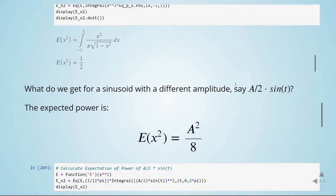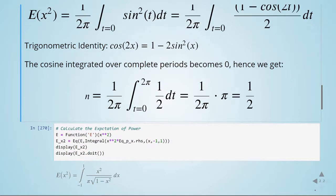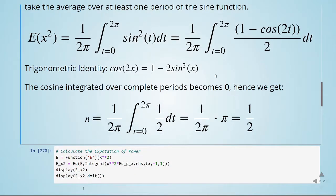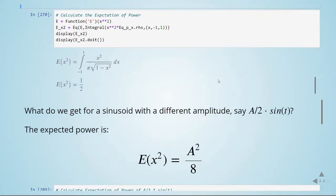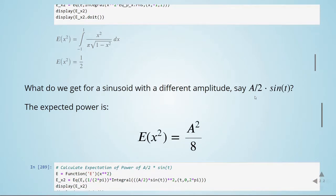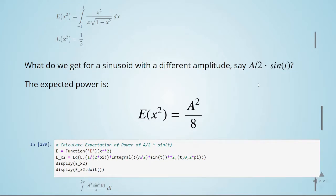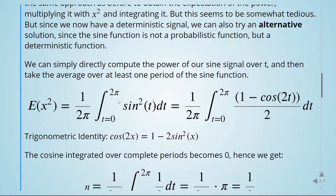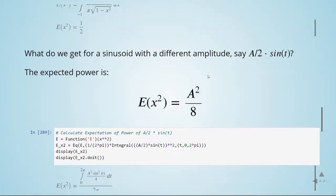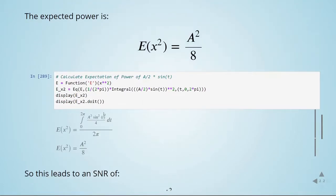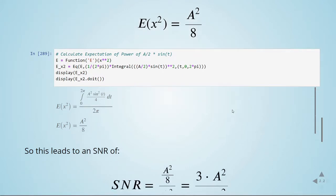So far we've seen the sine wave with amplitude from minus 1 to 1, but what happens with a different amplitude? If the amplitude is a divided by 2, going from minus a/2 to plus a/2, we replace the sine with (a/2) times the sine in the formula and compute the integral. We find that the expected power is a squared divided by 8.